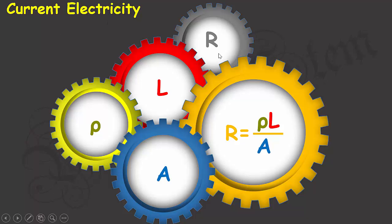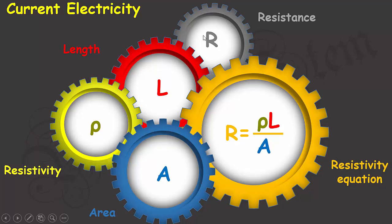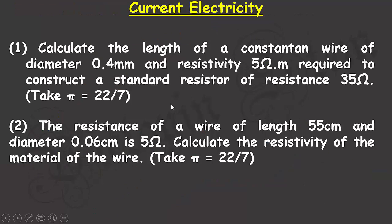In these problems you will see the resistance of a given wire, the length of the wire, the resistivity signified by rho, and the cross-sectional area of the wire. These four parameters are incorporated in the resistivity equation, where resistance is equal to the product of the resistivity multiplied by the length and inversely proportional to the cross-sectional area.